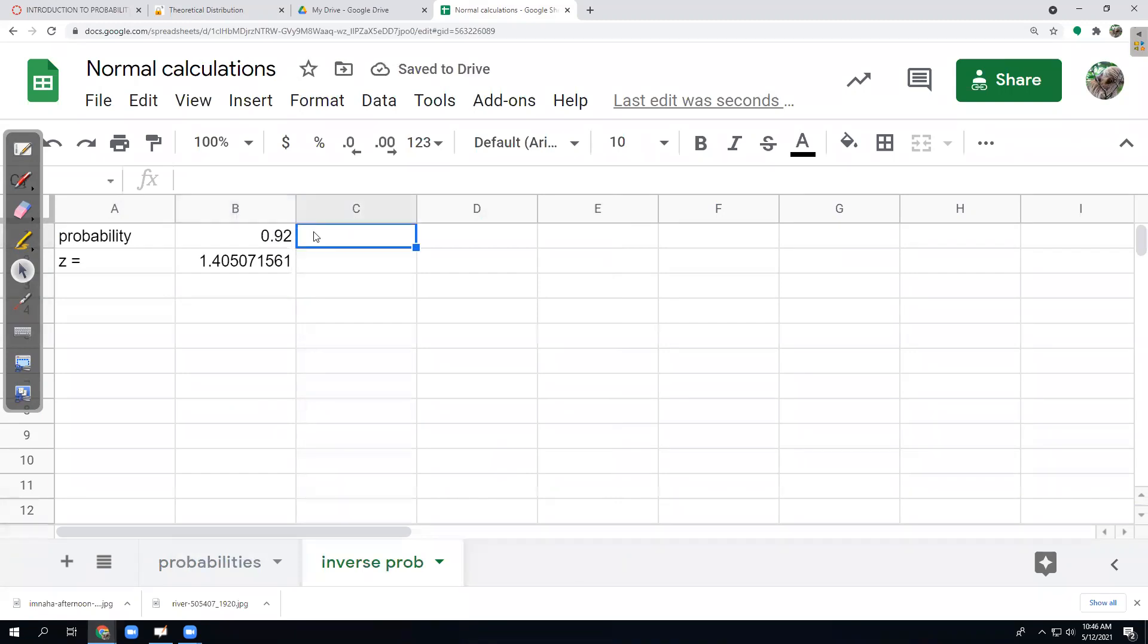These probabilities right here have to be left tail. Have to be, have to be, have to be. So if you're given a right tail, you've got to reverse it to get the left tail, which is a one minus.